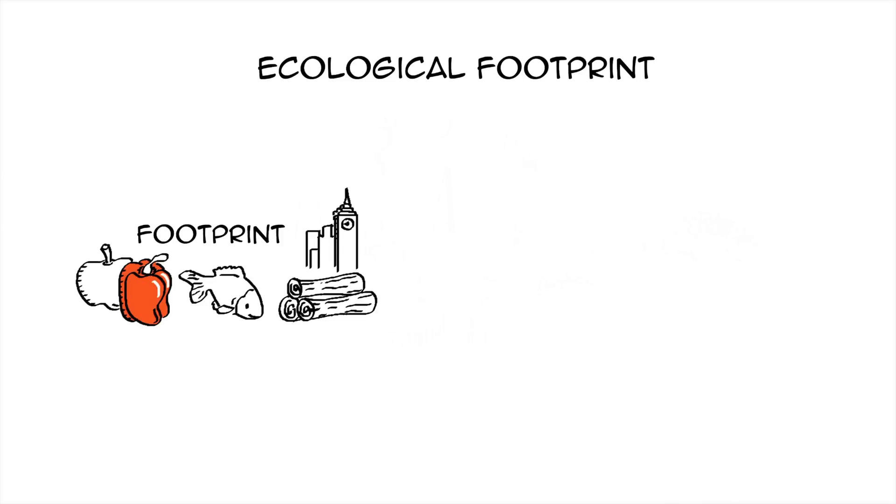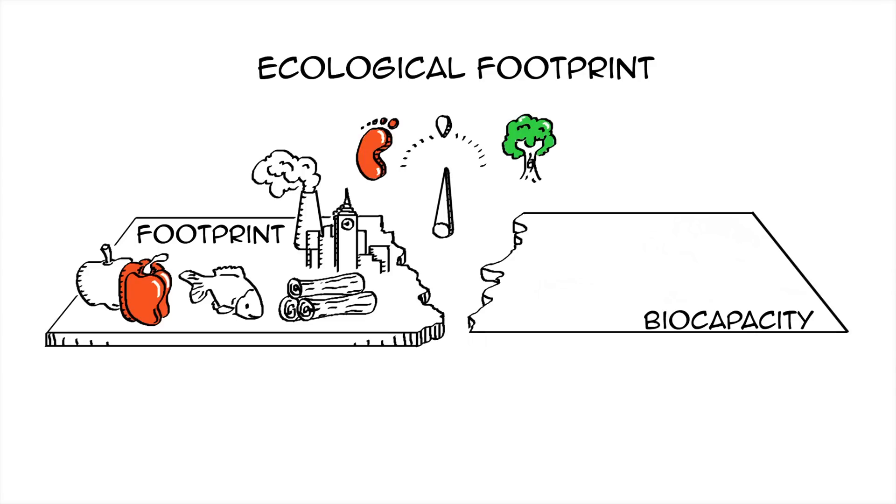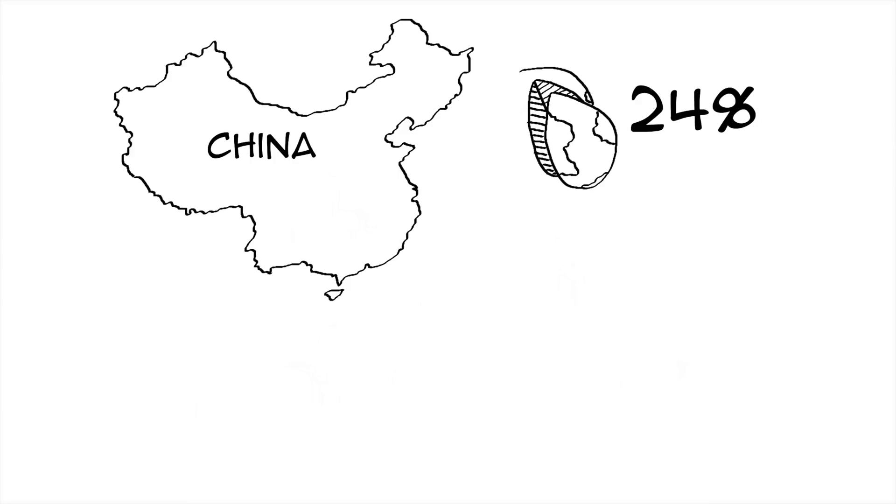The ecological footprint measures human demand on nature and can be compared to bio-capacity, which is the productivity of a region's ecological assets. China has the largest total ecological footprint, making up nearly 24% of the world's total ecological footprint.